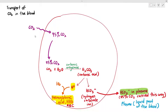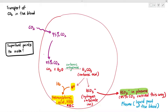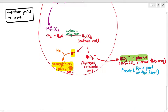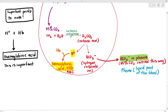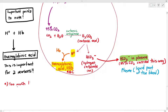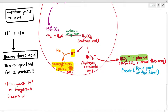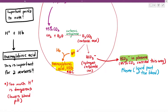Let's focus on the 85% of carbon dioxide: they bind with water, form carbonic acid, split to become hydrogen ions and hydrogen carbonate ions, and the hydrogen ions bind to hemoglobin. There is an important point to note when hydrogen ions bind to hemoglobin: they need to form hemoglobinic acid for two very important reasons. The first reason is that if you leave hydrogen ions floating around inside the cytoplasm, it is much too dangerous.